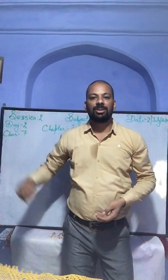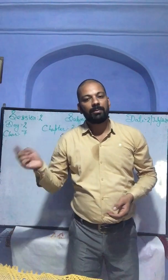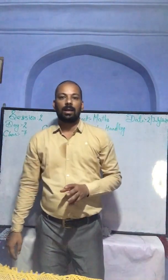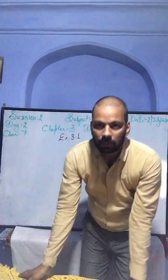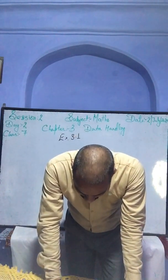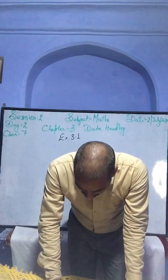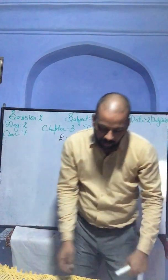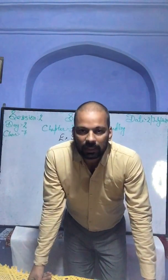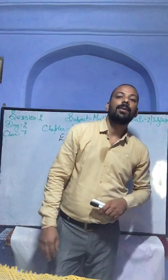Hi students, today we are starting Session 2, Day 2, continuing from where we left off on Day 1. On Day 1 we had left at Exercise 3.1, question number 1. Now we are going to do question number 2. Read carefully from the book: organize the following marks in the class assessment in a tabular form — which number is the highest, which is the lowest, what is the range of the data, and find the arithmetic mean.